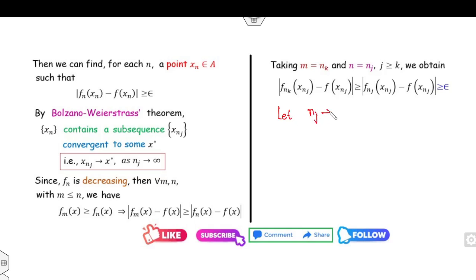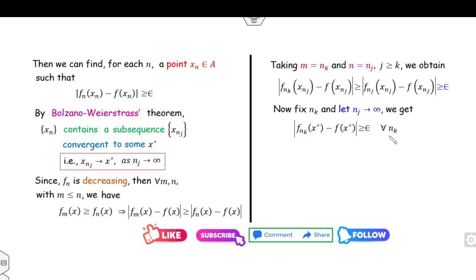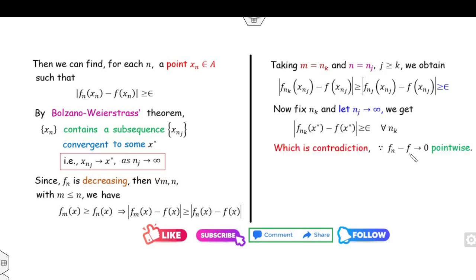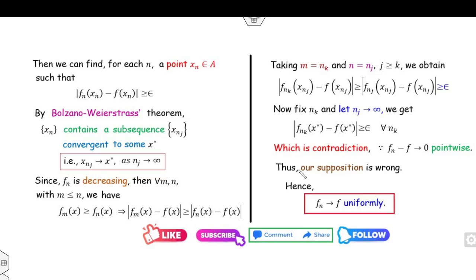Taking n_j → ∞, we get f_{n_k}(x*) − f(x*) ≥ 0 for all values of n_k, where x* belongs to A. This implies f_{n_k} minus f does not converge to zero pointwise, which is a contradiction since we assumed fn converges to f pointwise. Therefore our assumption is wrong, and the sequence converges to f uniformly.